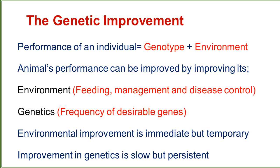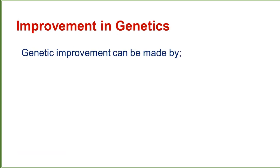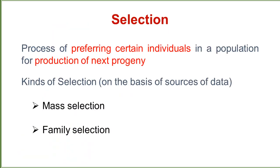Environmental improvement is immediate but temporary. We can improve the feeding of the animal, make management better, and control diseases, but these are temporary practices. The improvement in genes or genetics is a slow process, but it is long-lasting and persistent. Once improved genetically, animals are going to transfer those traits to their descendants.